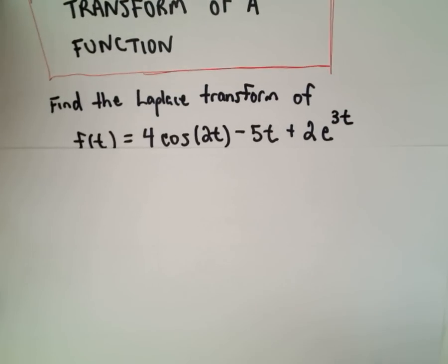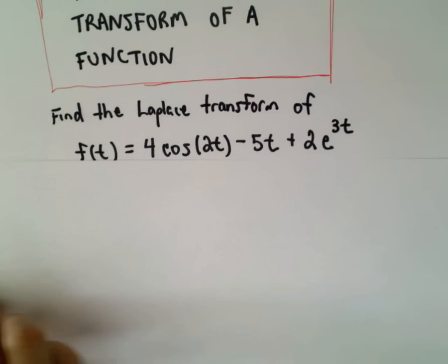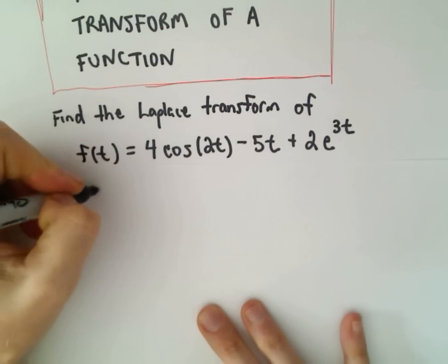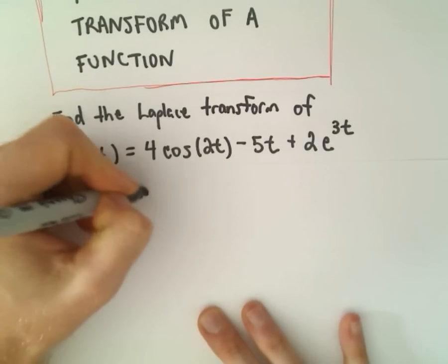So this won't be too bad at all. If we take the Laplace transform of all of this, we'll have the Laplace transform of 4 cosine of 2t.